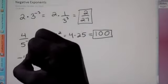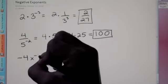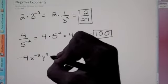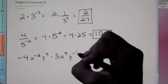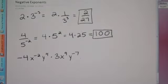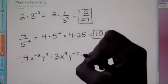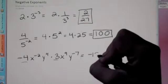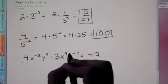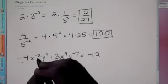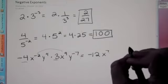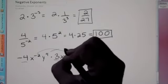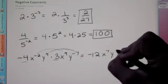Now let's throw some variables in there. If I give you negative 4 times x to the negative 2 times y to the 4th, times 3x to the 9th times y to the negative 7, we're going to do a couple of steps. First, combine the coefficients: negative 4 times 3 is negative 12. Then, for the same base when multiplying, add the exponents. Negative 2 plus 9 is 7 for the x's. For the y's, 4 plus negative 7 (or 4 minus 7) is negative 3.